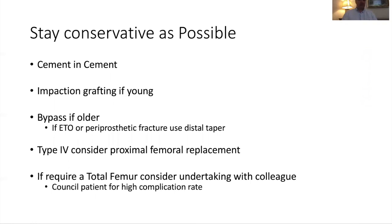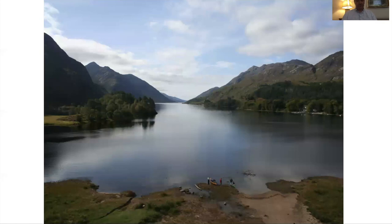To summarize femoral revision surgery: be conservative with a small 'c'. If you can do cement-in-cement, that is ideal. For younger patients with a reasonable diaphysis, emphasize impaction grafting. For older patients with more extensive diaphyseal damage, consider bypass fixation. If undertaking an extended trochanteric osteotomy or managing a periprosthetic fracture, consider distal taper fixation. For type 4, consider proximal femoral replacement and think carefully about restricting cement. If a total femur is required, do it with a colleague — these patients need extensive counselling due to high complication rates.